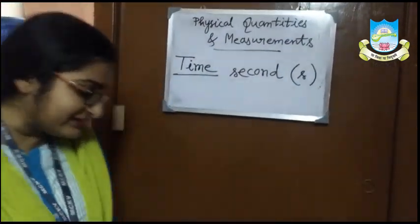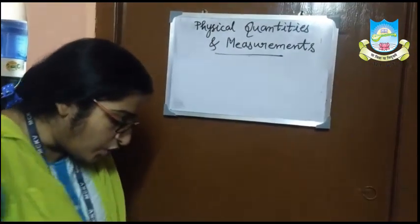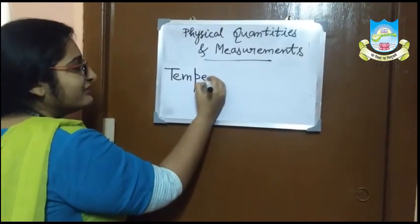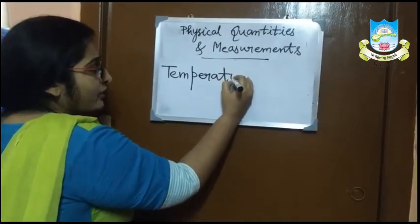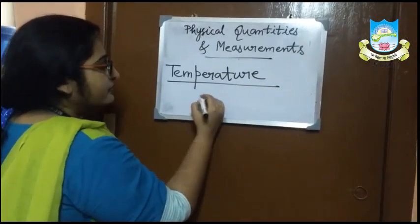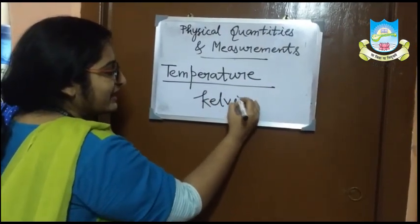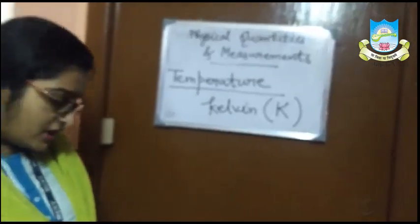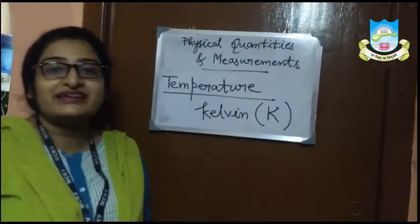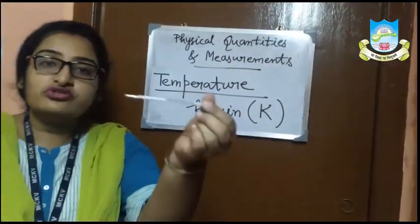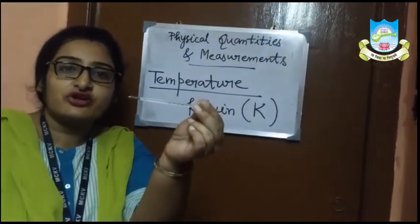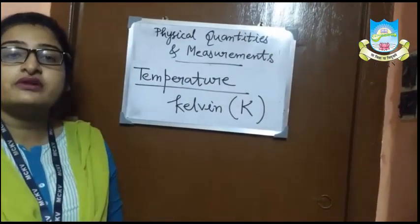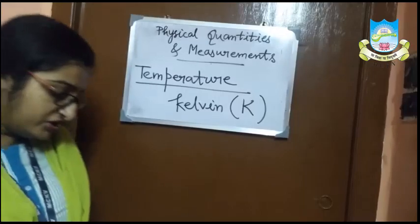Now we will discuss about temperature. Temperature is the degree of hotness or coldness of a body. The SI unit of temperature is Kelvin, and the other units are Celsius and Fahrenheit. We use a thermometer for measuring temperature. At home we use a clinical thermometer for measuring the temperature of a human being, which can measure from 35 degree Celsius to 42 degree Celsius.